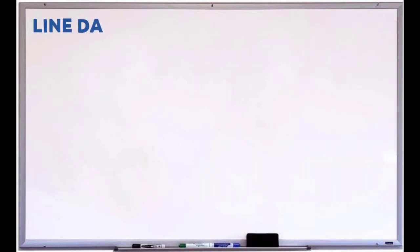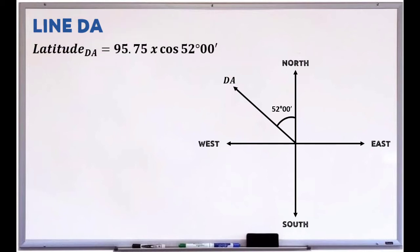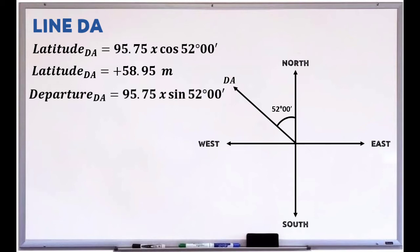For line DA, which lies in the fourth quadrant, the latitude is positive and the departure is negative. The latitude of line DA equals 95.75 × cos(52°) = positive 58.95. The departure of line DA equals 95.75 × sin(52°) = negative 75.45.